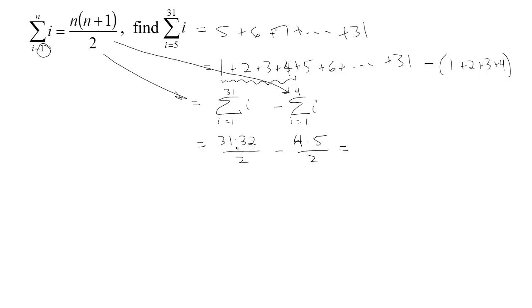And with a little simplifying here, 2 goes in there 16 times, so we have 31 times 16 minus, 2 goes in here twice, so minus 10. And let's see if we can multiply that pretty easy. 3 times 16 is 48, so we have 480. That would be, and 1 times 16 would be another 16, and take away 10 leaves 486 for the sum.